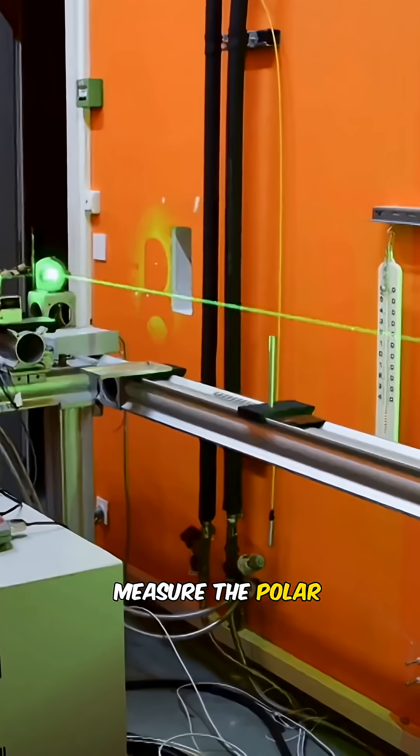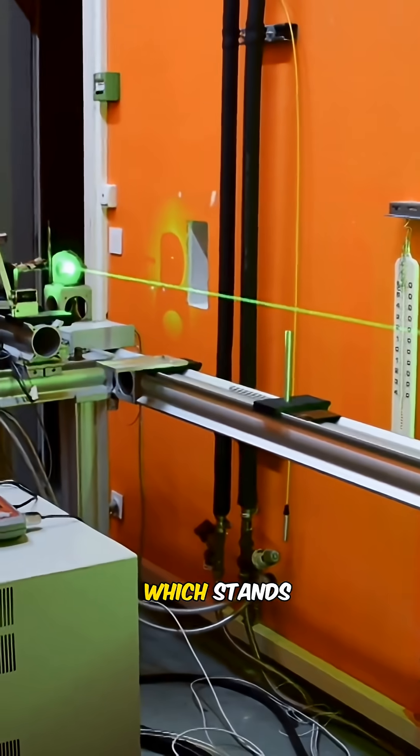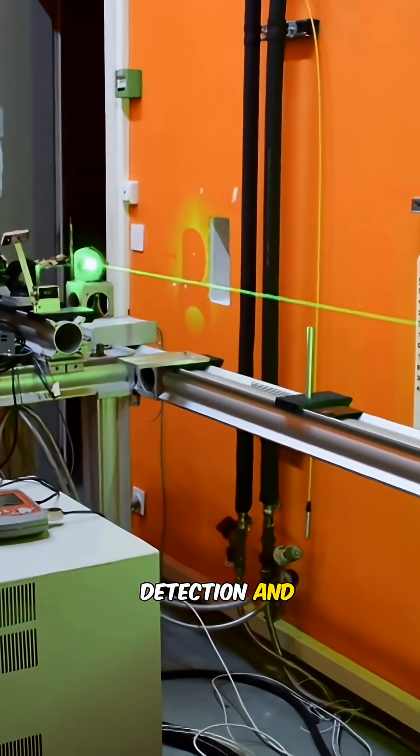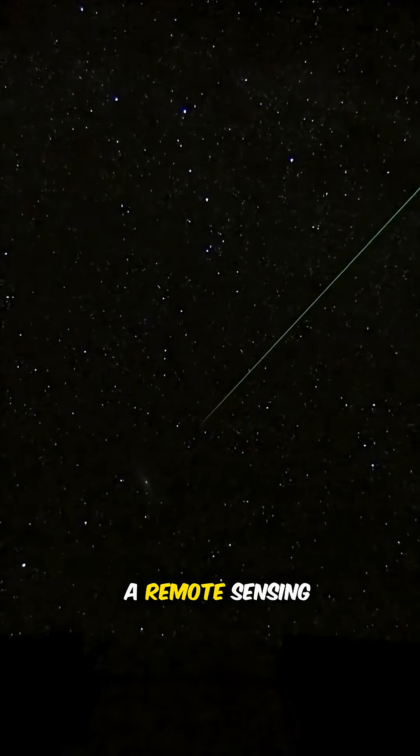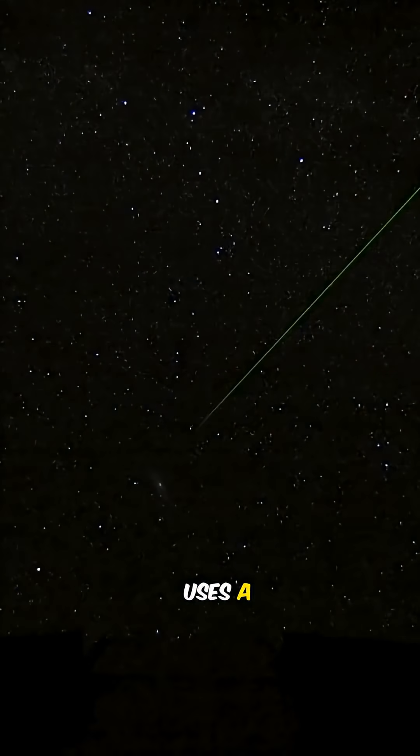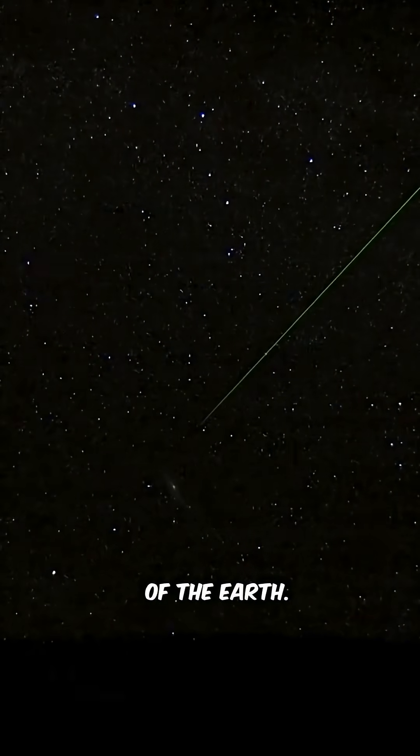Another tool to measure the polar vortex is LIDAR, which stands for Light Detection and Ranging. It's a remote sensing method that uses a laser to measure surfaces of the Earth.